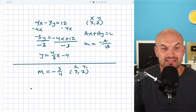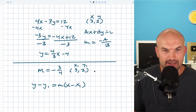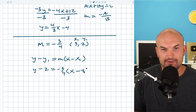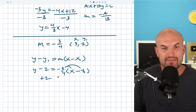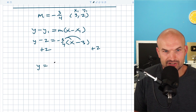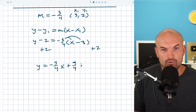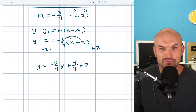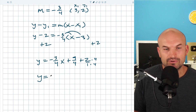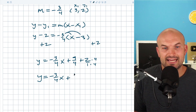Now I have a point and a slope. Let's plug them into point-slope form: y minus y1 equals m times x minus x1. With positive numbers here, that gives y minus 2 equals negative 3/4 times x minus 3. Now apply the distributive property and isolate y by adding 2 to the other side. Negative 3/4 times x is just negative 3/4 x. Negative 3/4 times negative 3 is positive 9/4. So we have negative 3/4 x plus 9/4 plus 2.